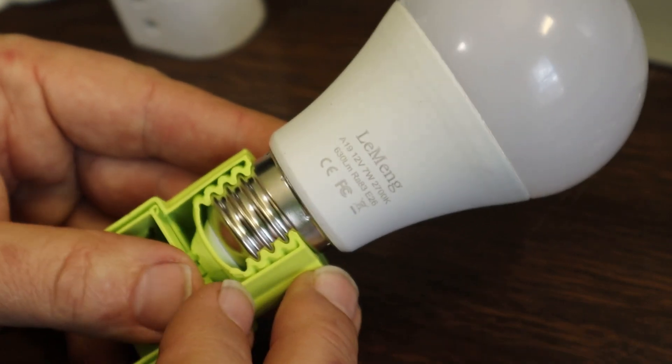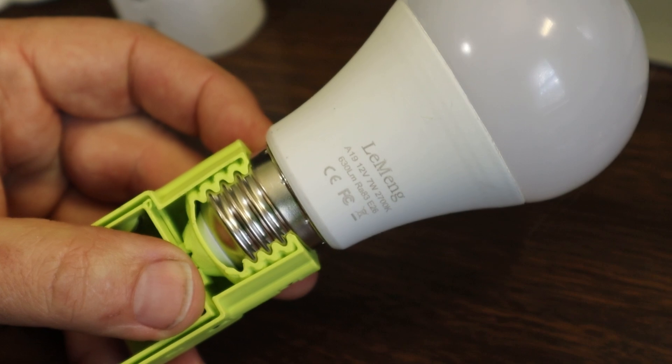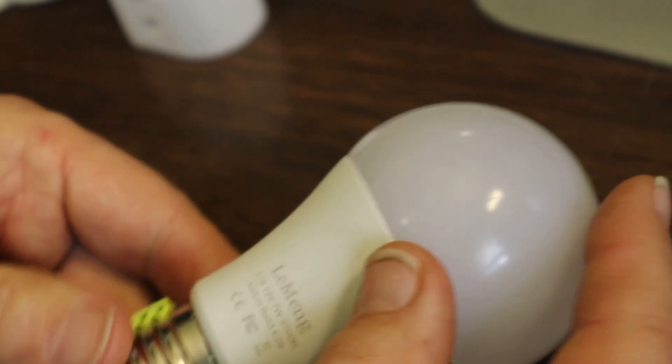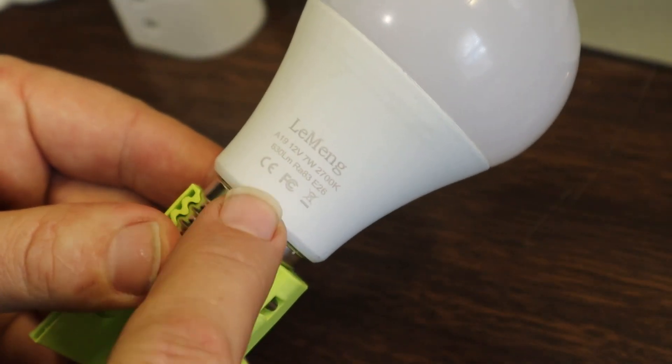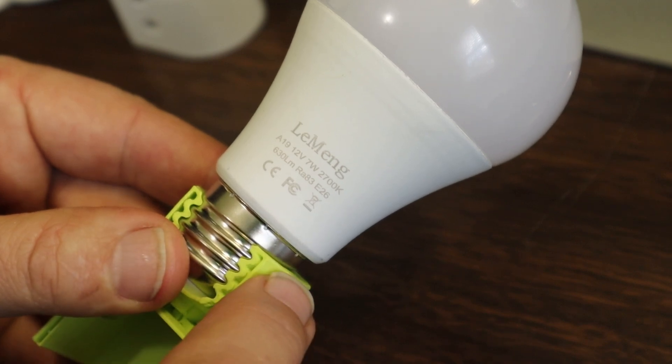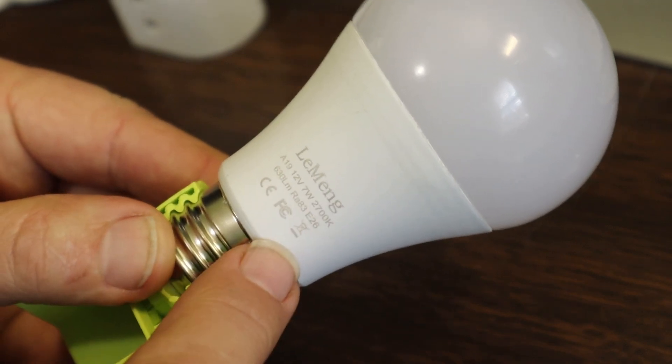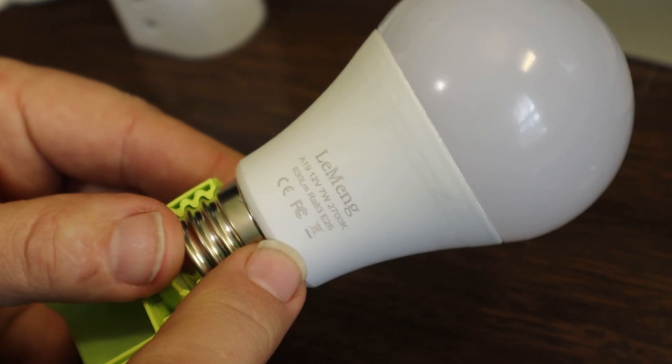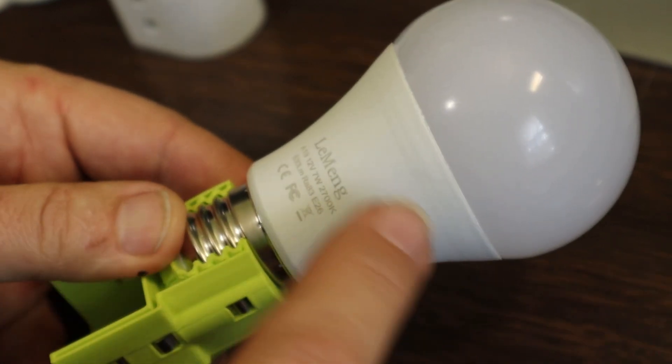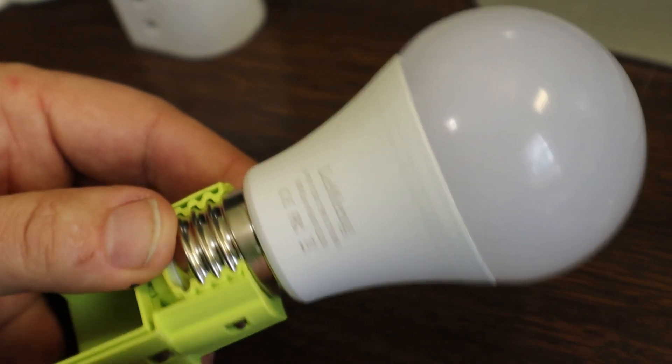So this brand is a good one. LeMang, these are actually designed for anywhere from 10 to 30 volts. So these are designed for like solar systems, for example, whether you had a 12 or 24 volt off grid solar system, you can run these right off your main battery pack.